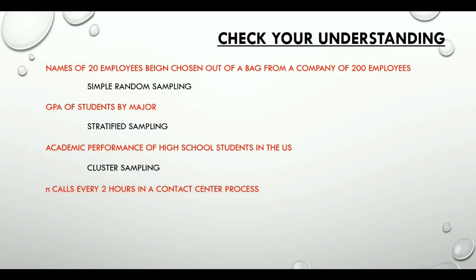The next one talks about N calls every two hours in a contact center process. This one should be very easy — this is systematic sampling.